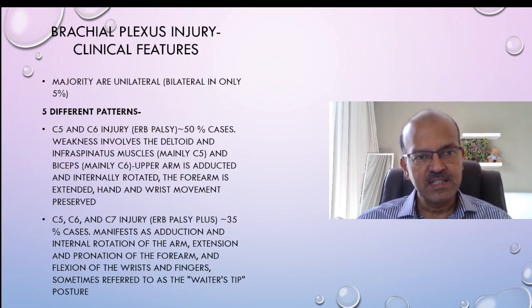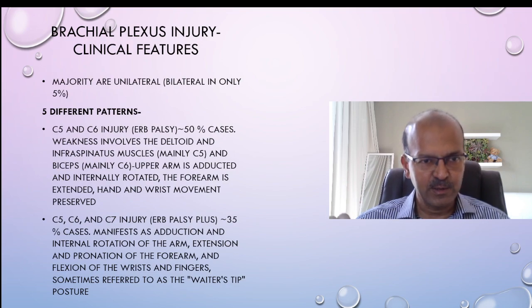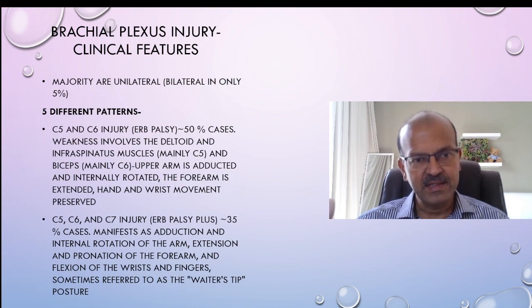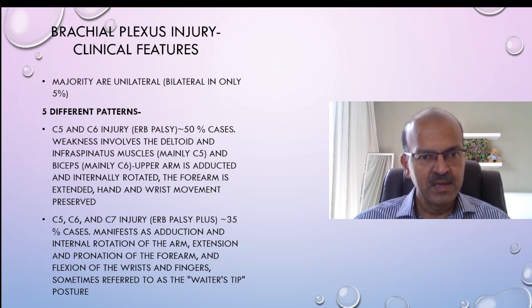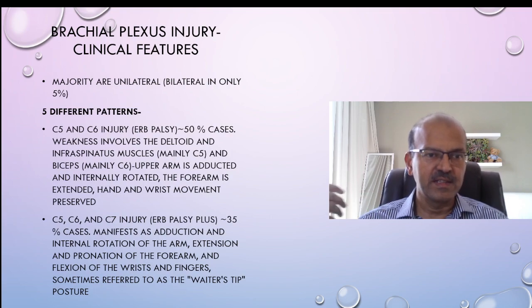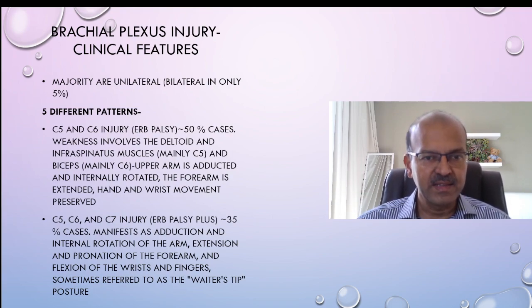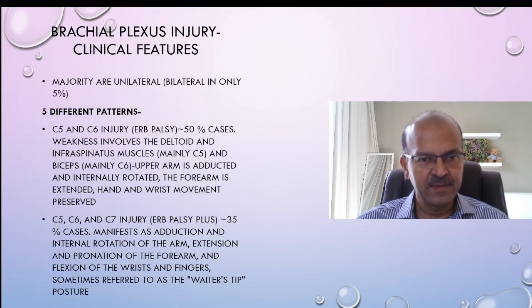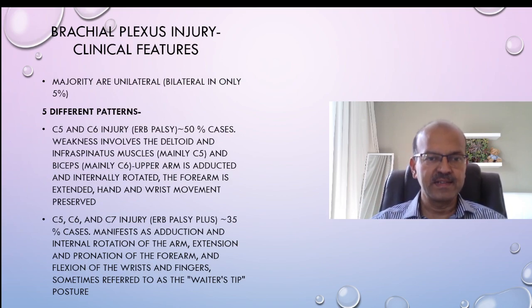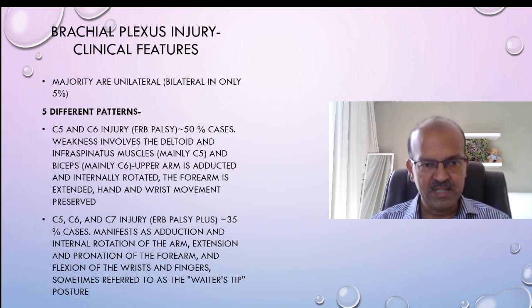The clinical features: majority are unilateral and only five percent are bilateral. There are five different patterns. The classic C5/C6 injury, or Erb's palsy, accounts for 50 percent of the cases. The weakness involves the deltoid and infraspinatus muscles, mainly the C5 root, and the biceps which is mainly C6 innervated. The upper arm is adducted and internally rotated, the forearm is extended, and the hand and wrist movement is preserved.